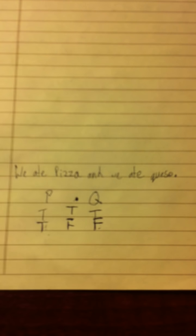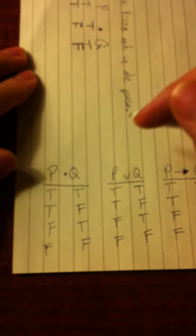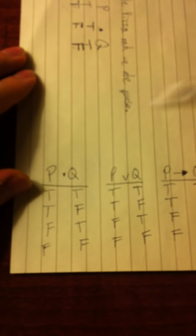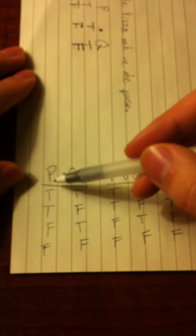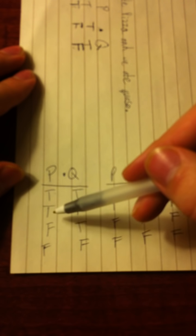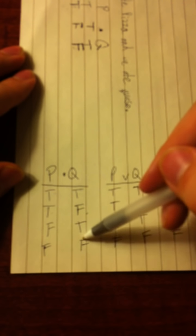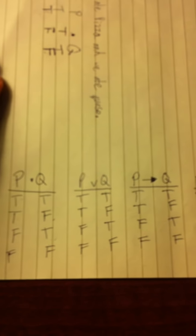Each symbol — the dot, the wedge, the tilde, all of them — has its own truth scheme. Here are all the symbols. Here's P and here's Q, and here are all the different combinations; there are only four. They could both be true, one could be true and the other false, the other way around, or they could both be false. You'll notice that pattern repeats itself through all the symbols, so all you really have to memorize is the middle column.